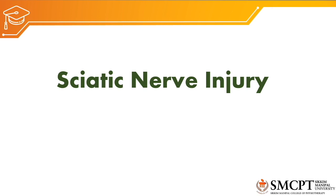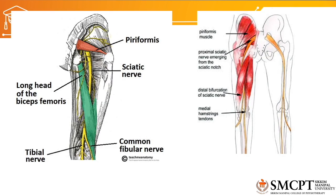Hello everyone. This class will start with lower limb nerve injuries. Sciatic nerve injury is one of the lower limb peripheral nerve injuries. The sciatic nerve arises from the L4 to S3 nerve roots from the lumbar plexus.